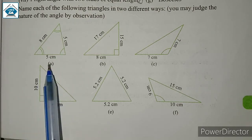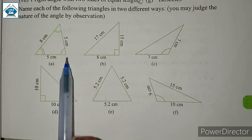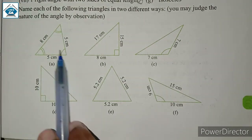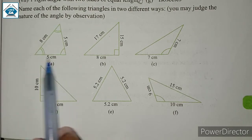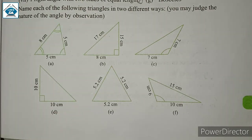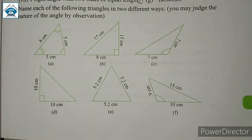For the triangle in figure A, it can be observed that the measure of two sides is equal — 5 cm and 5 cm. So in this triangle, two sides are of equal length and the third side is of a different length. Since two sides of the triangle are equal, it is an isosceles triangle — that is one of the names of this triangle.